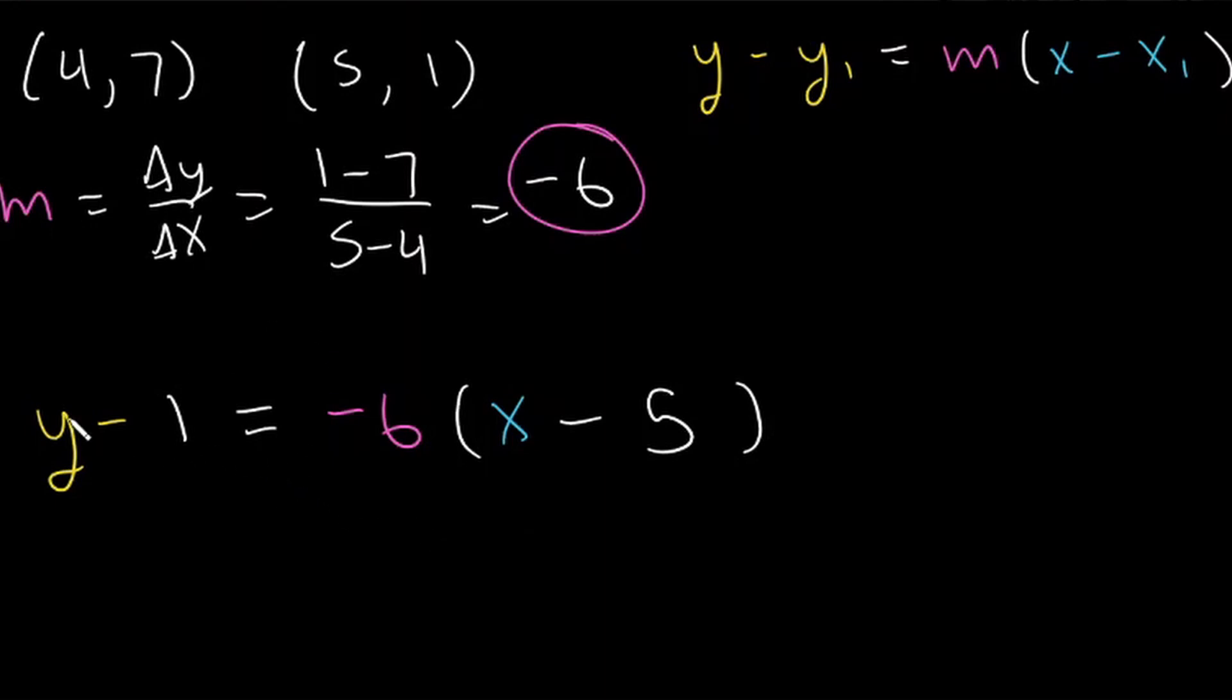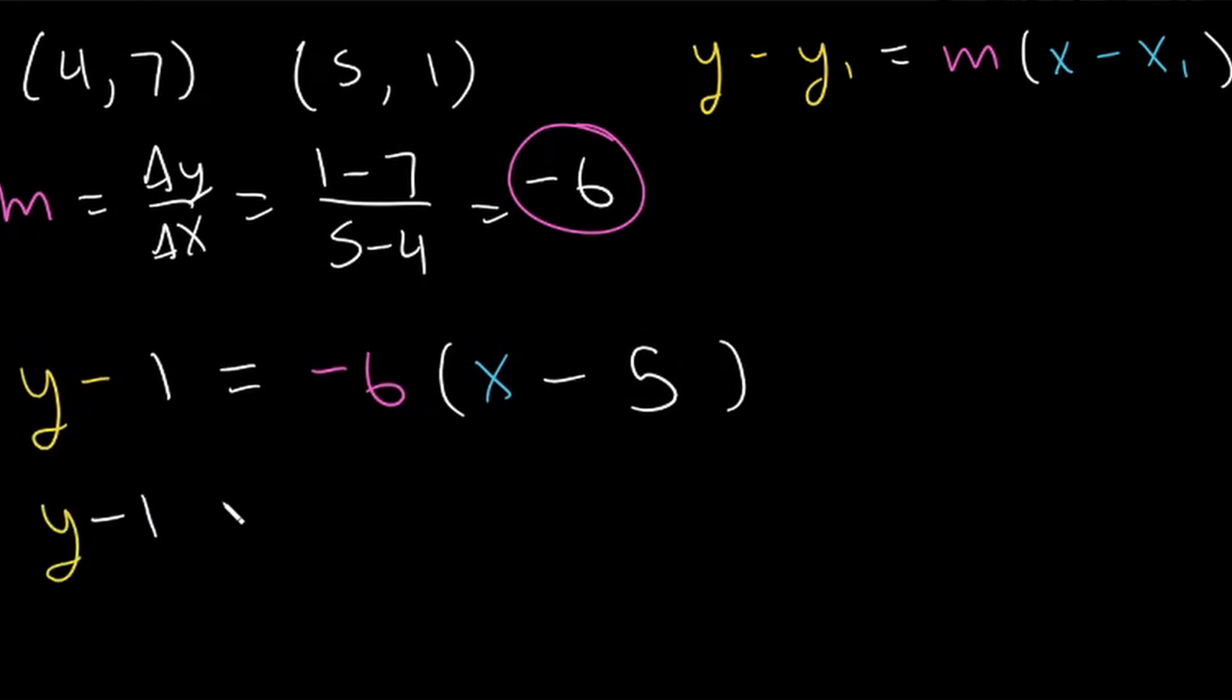So now we can distribute all this and simplify. So we're going to have y minus 1 is equal to, let's distribute this negative 6, it's going to be negative 6x, and then negative 6 times negative 5 is 30. So now the only thing left to do is add 1 on both sides, and our final answer in slope-intercept form is going to be y is equal to negative 6x plus 31.